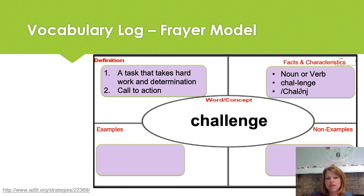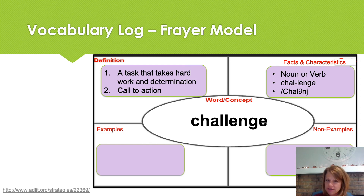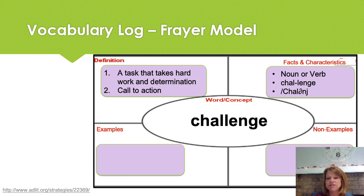Let's go back to our word work with our Frayer model. From your life experience, also from what we've learned in the text, and from the list we read together, what are some examples of challenges that you can write or draw in your Frayer model? Remember we can use illustrations as well. What about non-examples — things that are not challenging? Write some words in the non-examples square at the bottom right of your Frayer model, or draw pictures to help you remember the opposite or antonym for challenge. Remember, antonym means opposite. Good job.